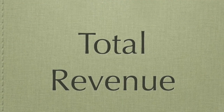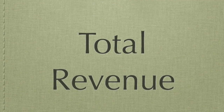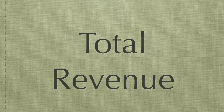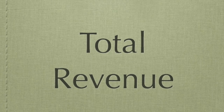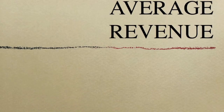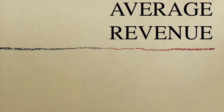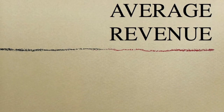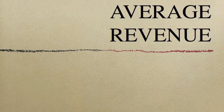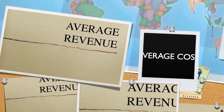The amount received from the sale of a given output can be called total revenue. It can be calculated by multiplying quantity and average revenue. Average revenue is the amount received from the sale of each unit. It can be calculated by dividing total revenue by quantity.